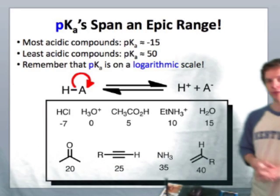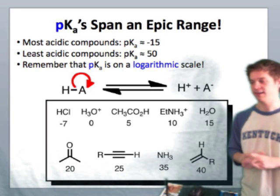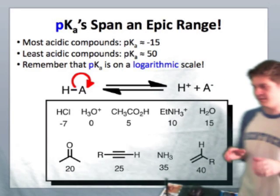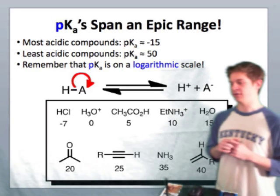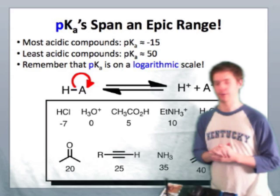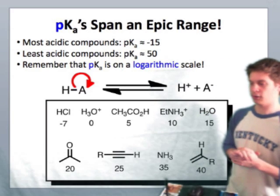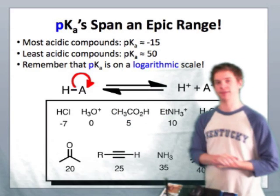What you'll realize if you take a look at a table of pKa's is that the range that they span is absolutely epic in proportions. So the lowest pKa's typically used in a practical setting in organic chemistry are around negative 7 to negative 10. HCl,